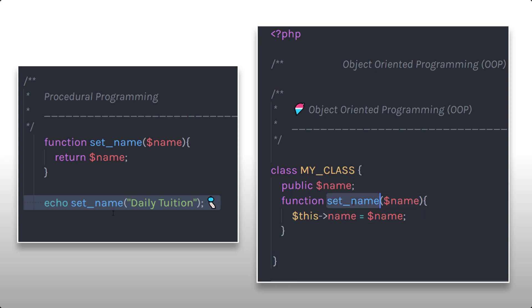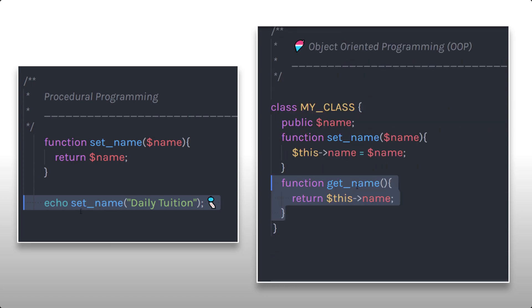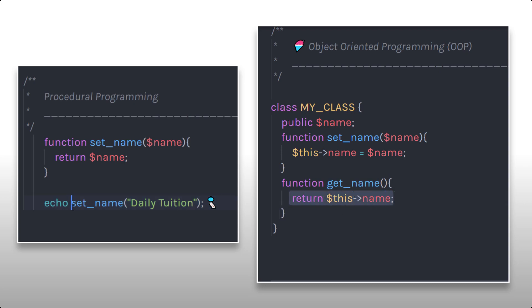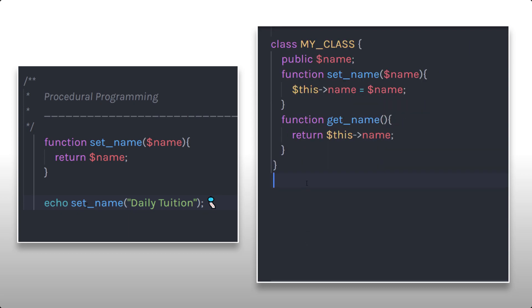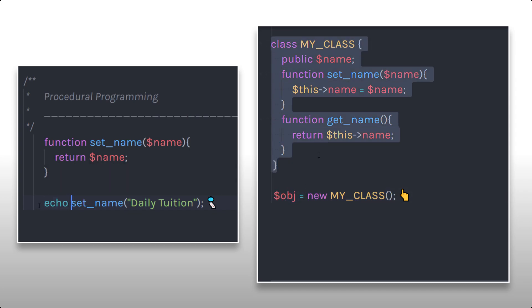When you specify a parameter to this set name function, it's going to assign it to this property. Just after that, I am going to create a new function to get the value of this property — I'll name it get name and return this property. To call this function or access this property, you need to create an object of this class. So I am going to create a PHP variable, specify an equal sign, and say new MyClass with parentheses. This statement is going to create an object of this class, so now I can access all the properties and methods of this class using this object.